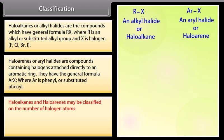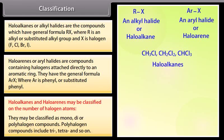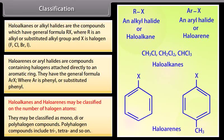Haloalkanes and haloarenes may be classified on the number of halogen atoms. They may be classified as mono, di, or polyhalogen compounds. Polyhalogen compounds include tri, tetra, and so on.